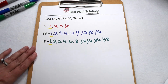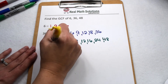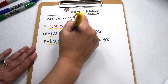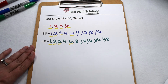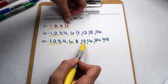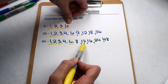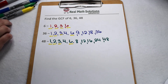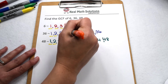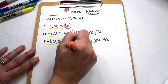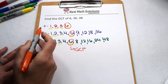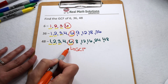Looking at common factors of all three values, 1 appears on all of those lists, so does 2. 3 appears as a common factor of all three values, as does 6. Now if we look from there, we see that 12 is on the list for 36 and 48, but it's not on the list for 6, so it can't be considered a common factor since all three values don't share it. That tells us the greatest factor that all three values share is 6, so the greatest common factor of 6, 36, and 48 is 6.